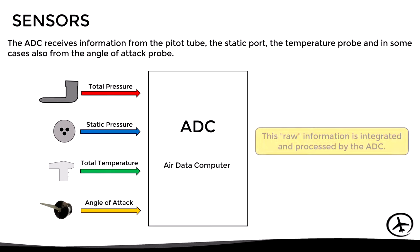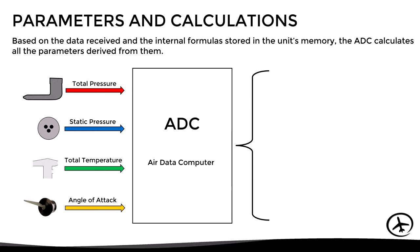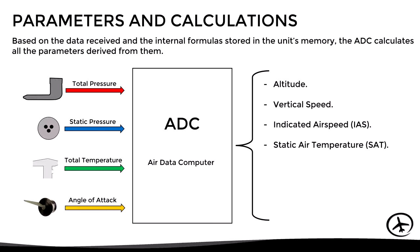The information received from these sensors is completely raw, so the task of the ADC is to integrate and process this data. Once the information has been processed, the ADC uses formulas stored in its memory to calculate all derived parameters. Normally these parameters are the barometric altitude, vertical speed, indicated airspeed, static air temperature, true airspeed, Mach number, and angle of attack.